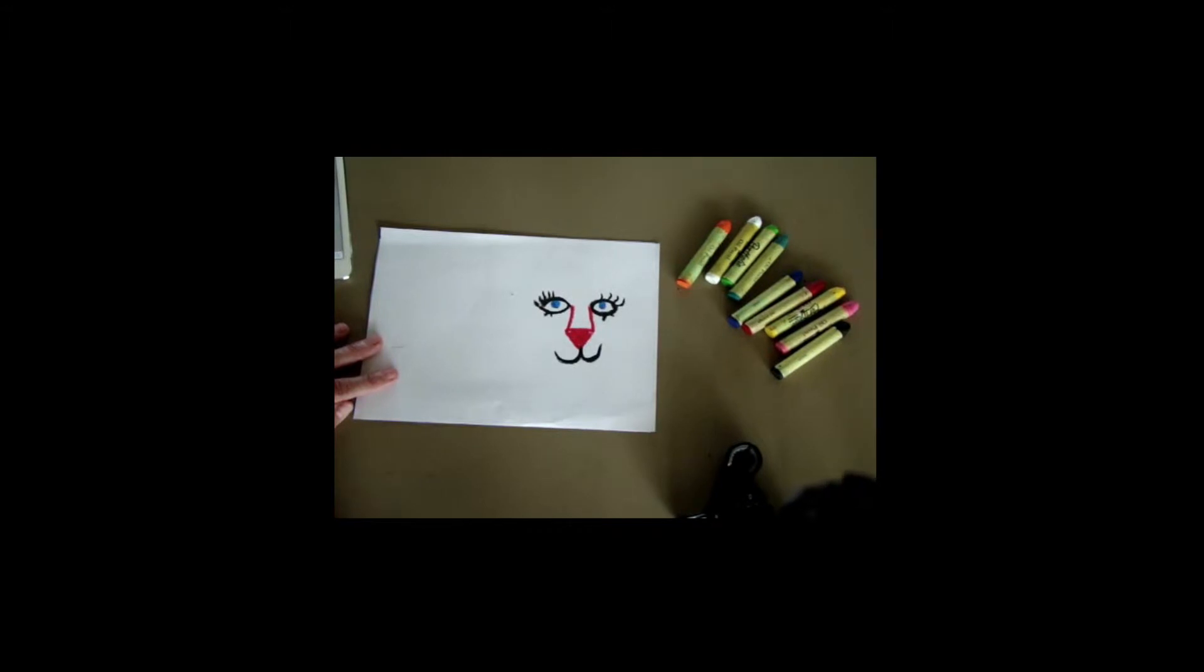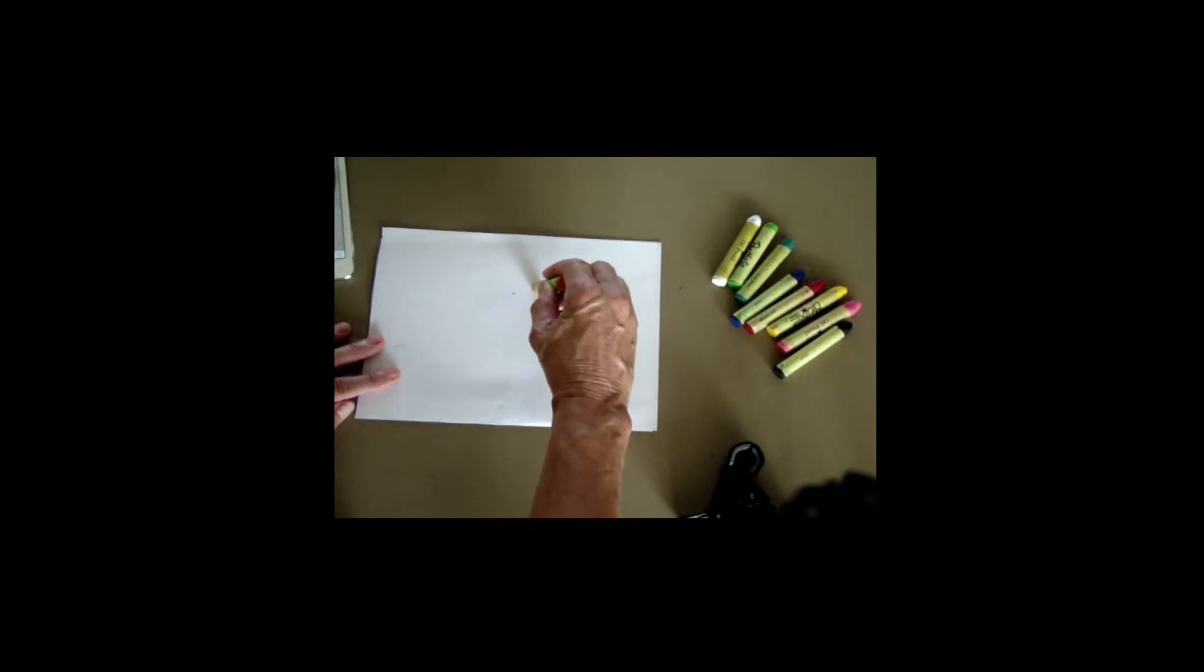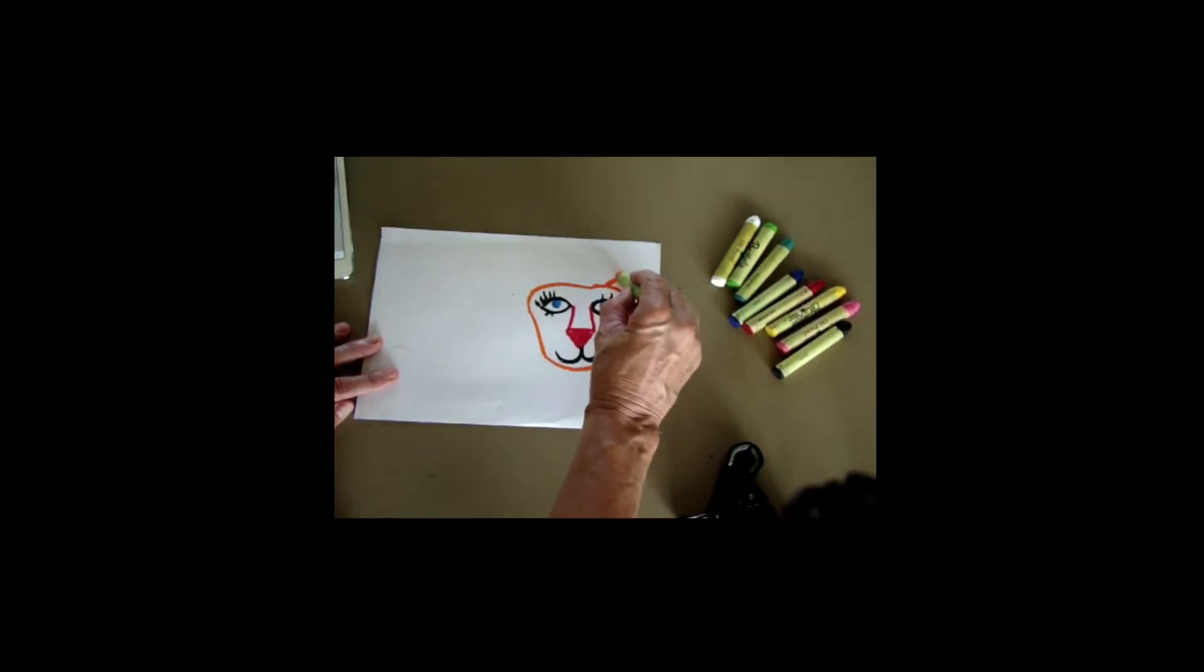Now, the hair around the lion's face is not very long. So, we're going to choose a color and just put a small little circle right around our lion's face. You could even make two rainbows on top to be his ears.